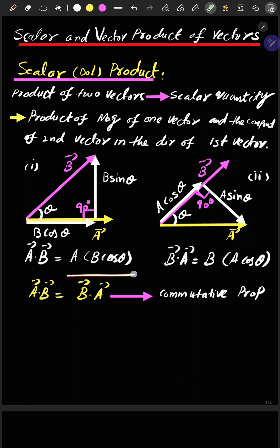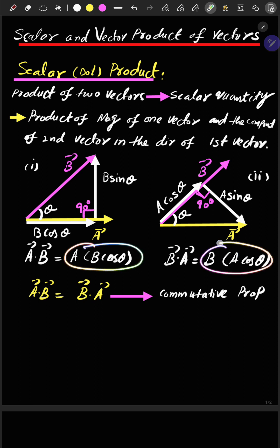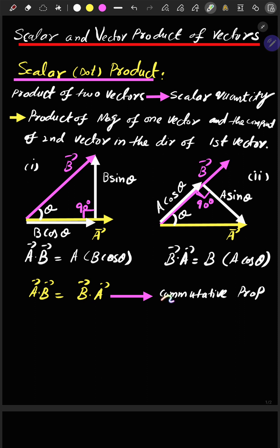Since the right-hand sides of both equations are scalar, we can say that A dot B is equal to B dot A, because both terms are equal to one another irrespective of their order of multiplication. This clarifies that the scalar product obeys the commutative property.